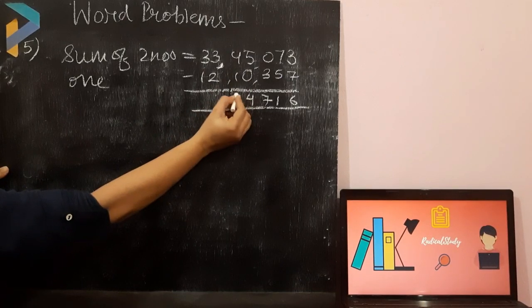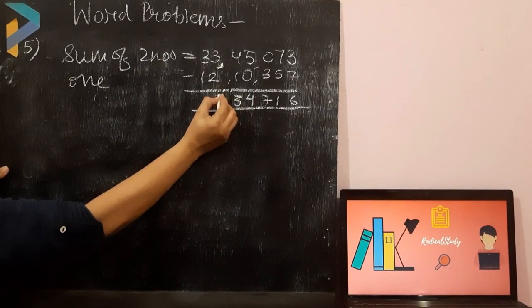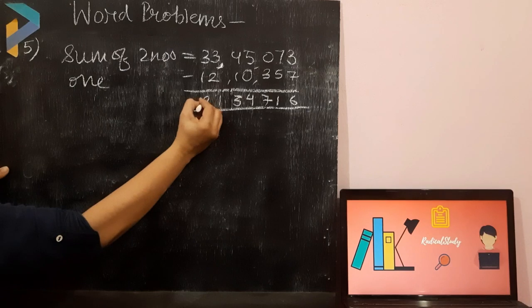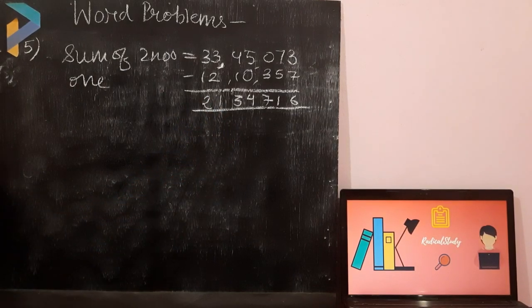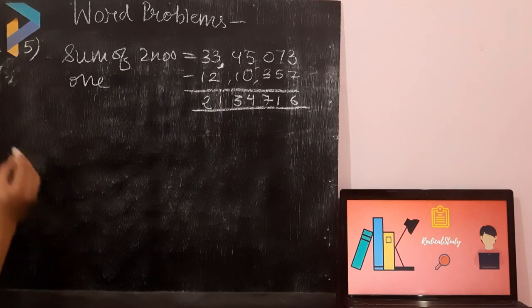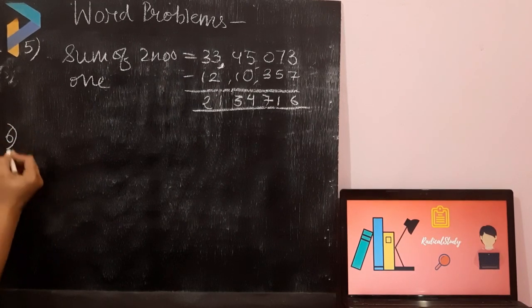4 minus 1 is 3. 3 minus 2 is 1. 3 minus 1 is 2. So, the other number is 21,34,716. Now, I am going to solve the next question for you.